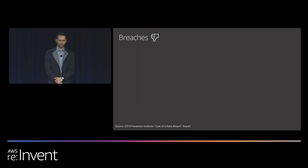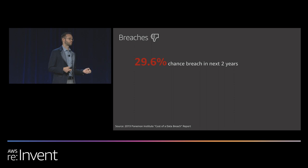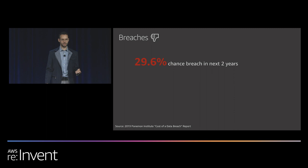Breaches — everybody would agree, thumbs down, nobody wants a breach. There was a really interesting study, the Ponemon Institute cost of a data breach report. In 2019 they had very interesting figures: a 29.6% chance of a breach in a given organization sometime in the next two years. So look around the room — more than one and a quarter of you is going to experience a breach in your organization in the relatively near future. This is something we should definitely be thinking about today. You don't want to start thinking about it when you need to.